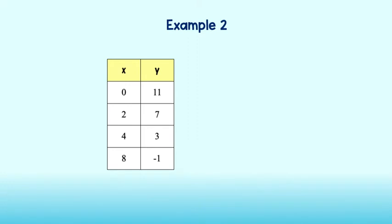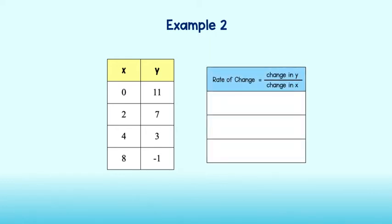Let's take a look at another example. If this represents a linear function, it will have a constant rate of change. To find the rate of change, we will find the change in y over the change in x. Okay, from 11 to 7, we subtract 4, and from 0 to 2, we add 2. The change in y is negative 4, and the change in x is positive 2. Therefore, our rate of change is negative 2.